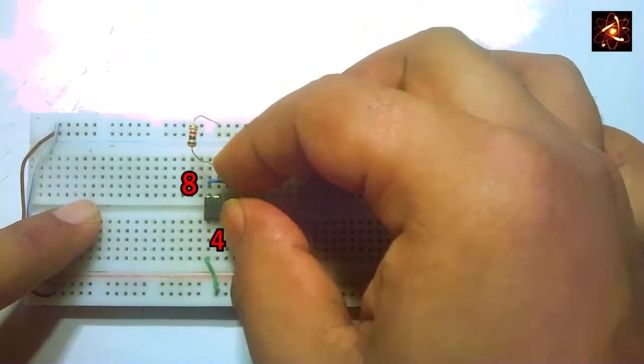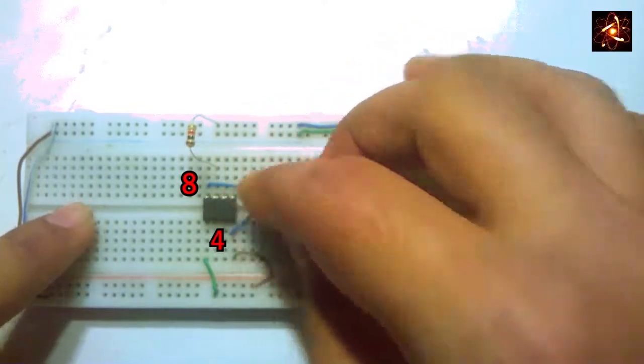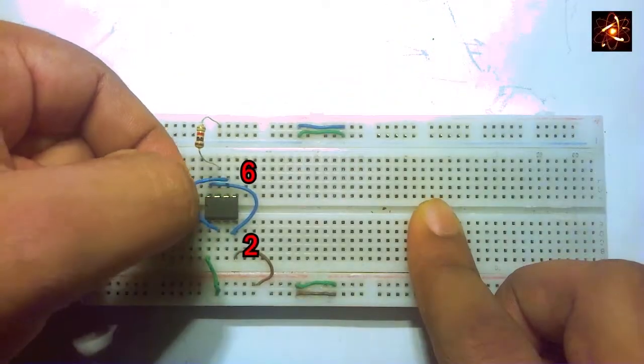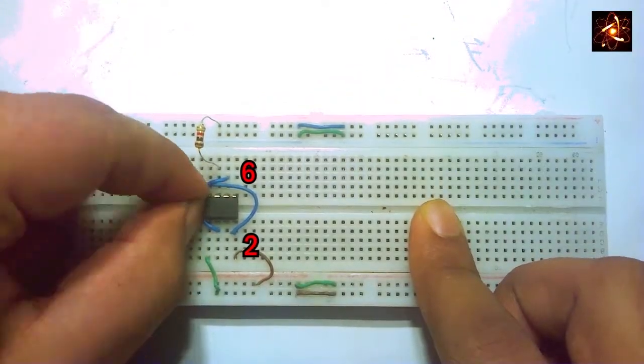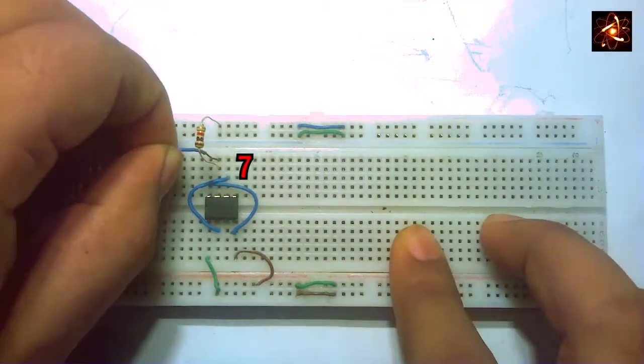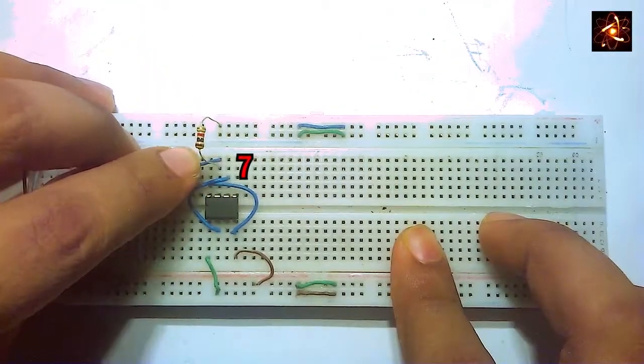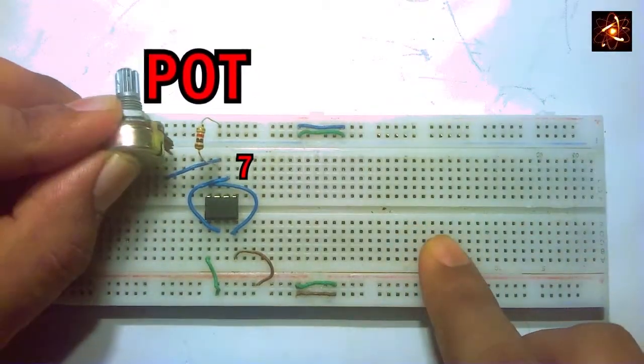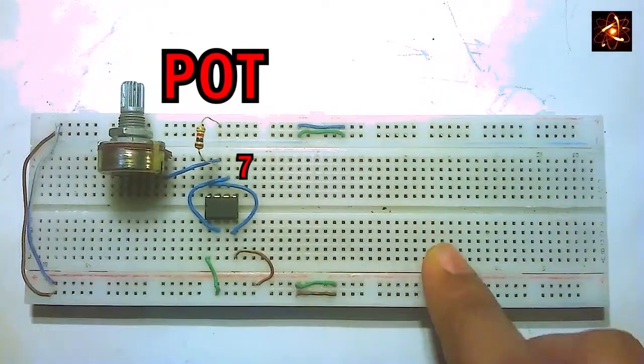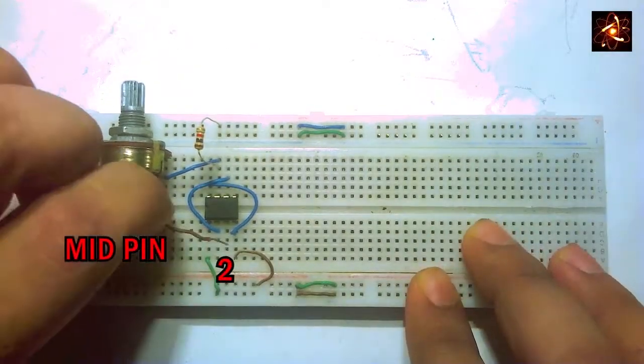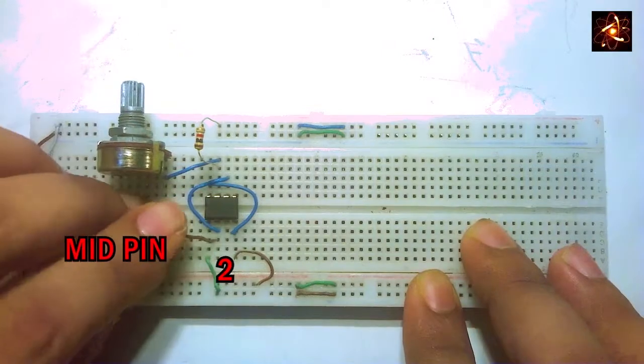Short pin 4 with pin 8 of the IC, connect pin 2 with pin 6 of the IC. In pin 7 we add a wire and the opposite side of the wire is connecting with a pot which is the variable resistor. The middle pin of the pot is connecting in pin number 2 of the IC.